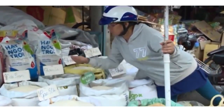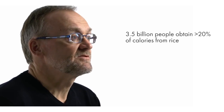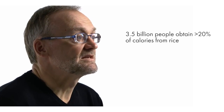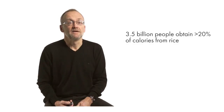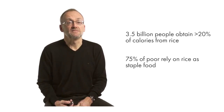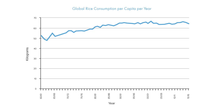Let's look at this in a bit more detail. On a food security and poverty scale, it is the most important human food crop for direct human consumption. It is estimated that about 3.5 billion people obtain more than 20% of their daily calories just from rice. And about 75% of the world's poor rely on rice as their main staple food source. The average annual global consumption is something like 65 kilograms per capita worldwide, and it hasn't changed since the mid-1980s.